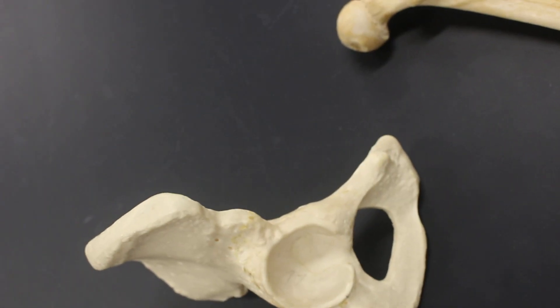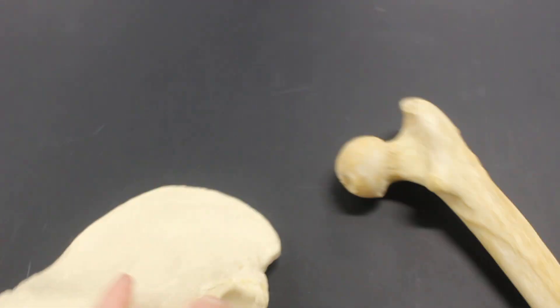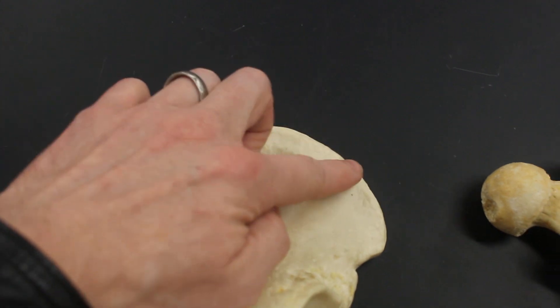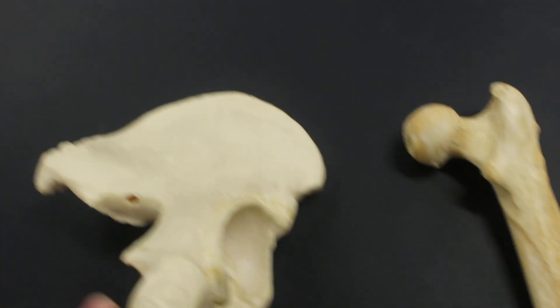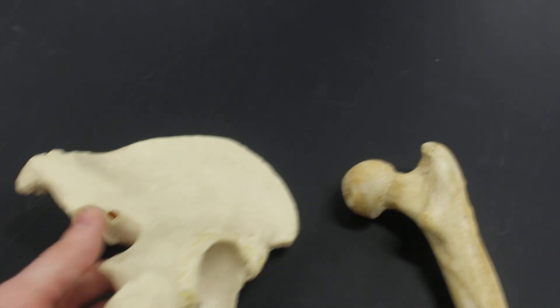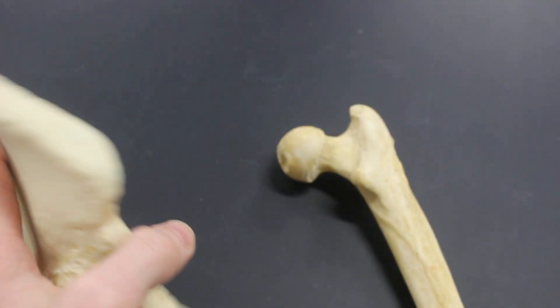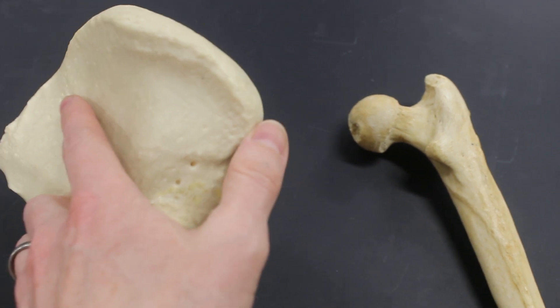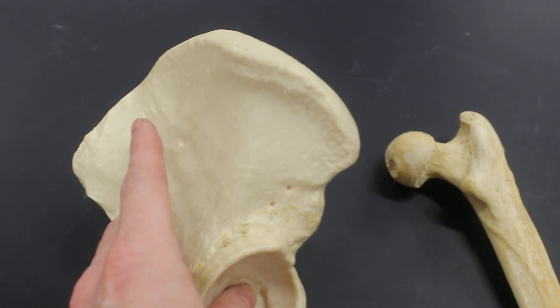Structures on the os coxae include the iliac crest running along the top of the ilium. Also includes the anterior superior spine, so that spot right there, anterior superior iliac spine.